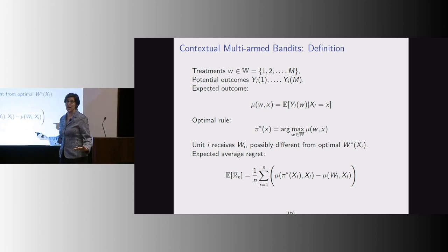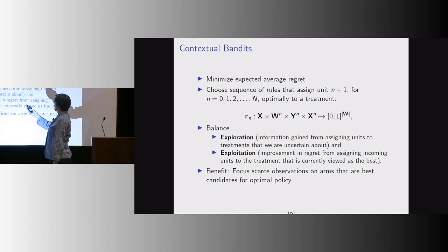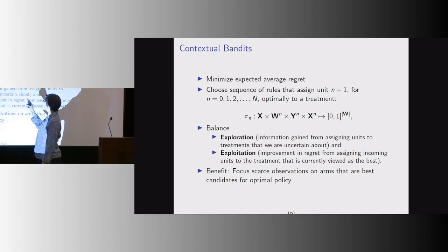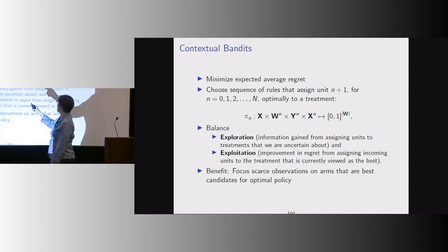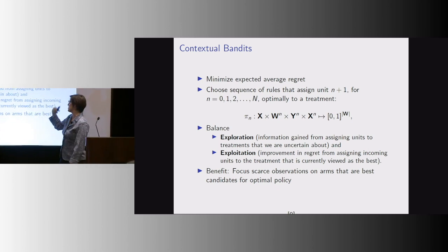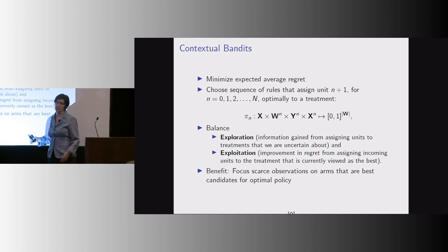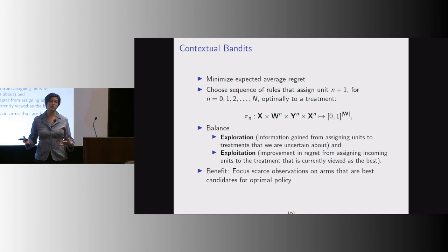I still feel like the first few empirical applications will get a lot of play. What we want to do is find a mapping — actually a series of policies — where for each observation there's a new policy that takes all historical data together with the person's covariates and comes up with a probability of assignment for each arm. This is a very complicated function space, making it hard to analyze theoretically. Amazingly, there are a bunch of theorems about this; in one of my papers we have a nice theorem.